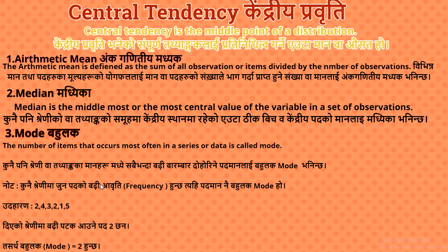Central Tendency is the middle point of a distribution — Kendriya Praviti. It summarizes all observations into a single representative value. There are 3 things that can be found in Central Tendency, and these 3 measures are very important.